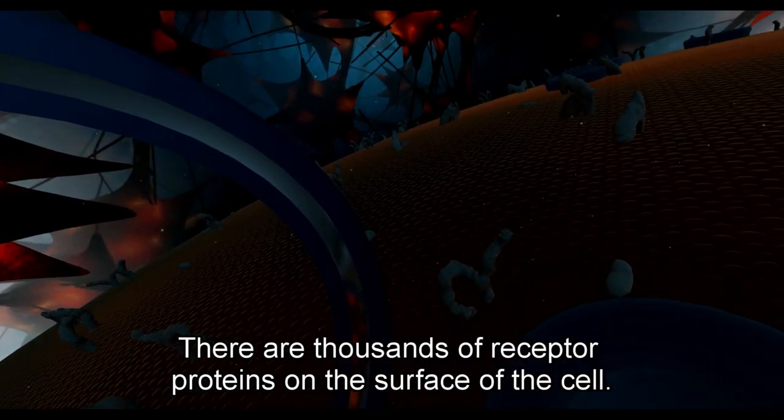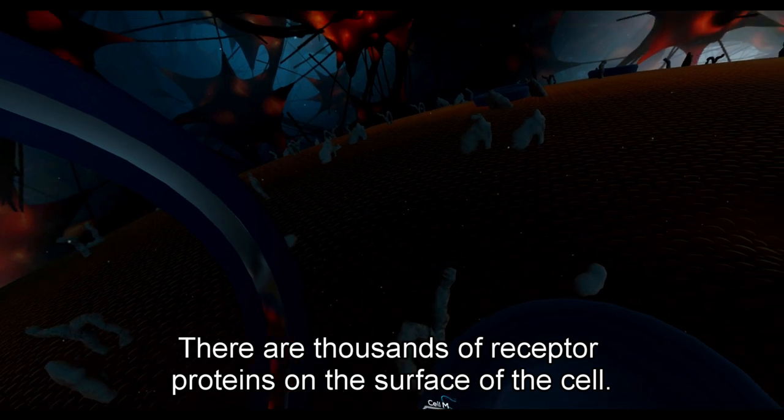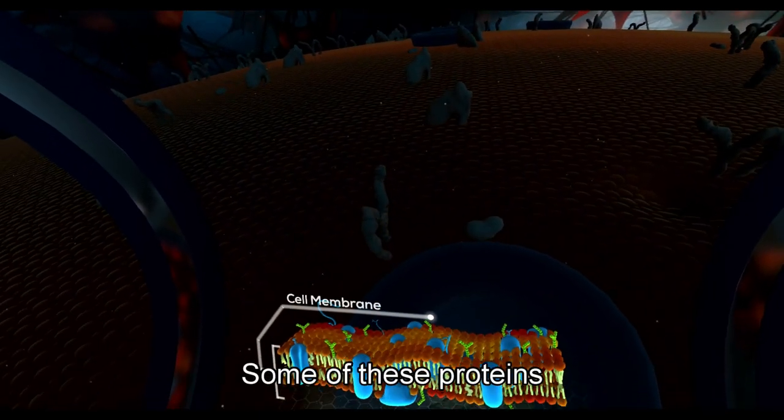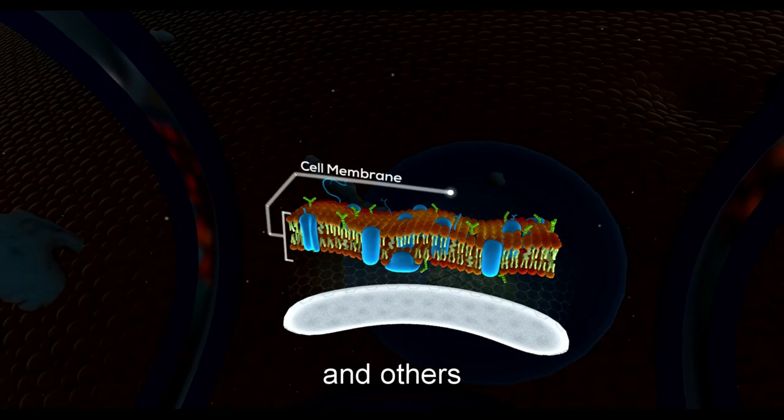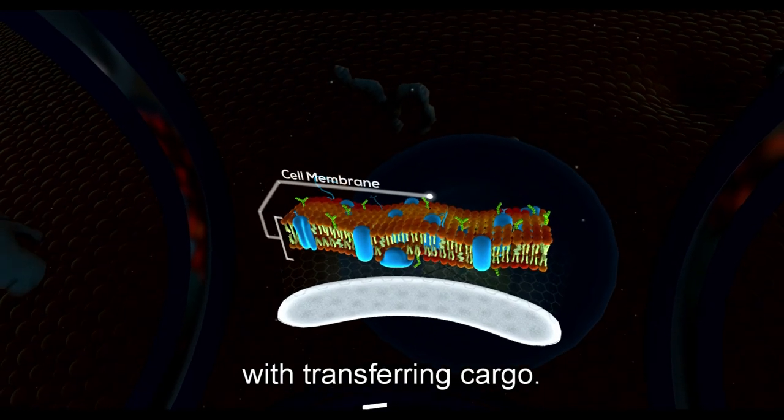There are thousands of receptor proteins on the surface of the cell. Some of these proteins are tasked with transferring information, and others with transferring cargo.